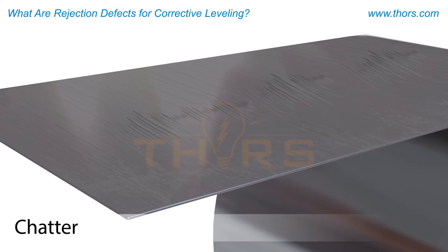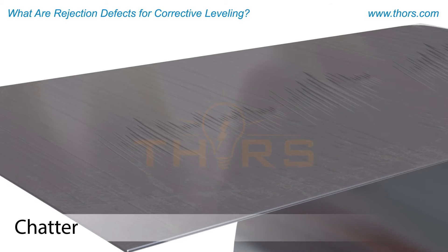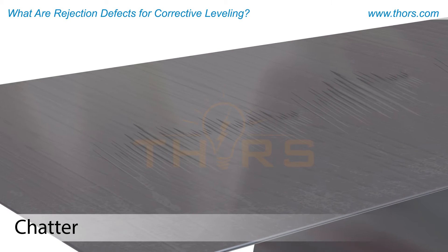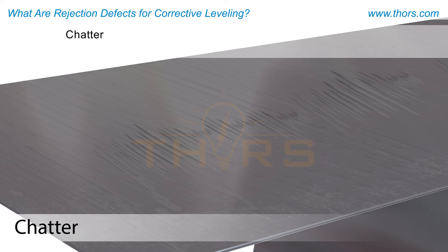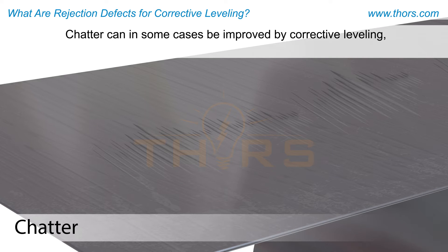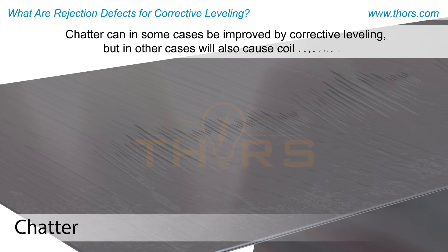Chatter appears as a series of etch-like marks in the material. Chatter can, in some cases, be improved by corrective leveling, but in other cases, it will also cause coil rejection.